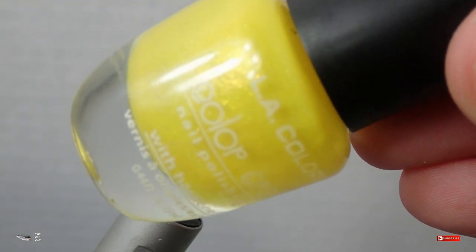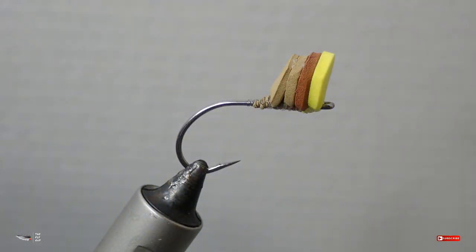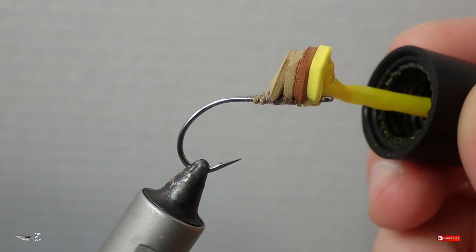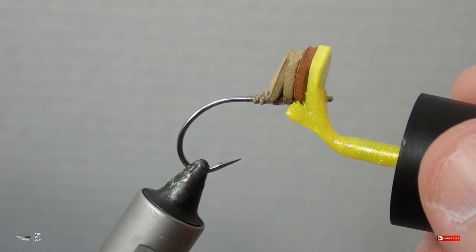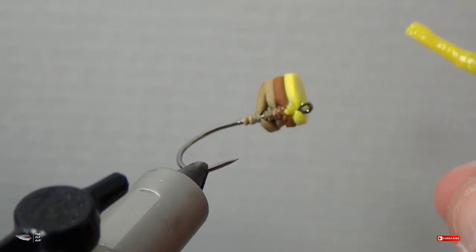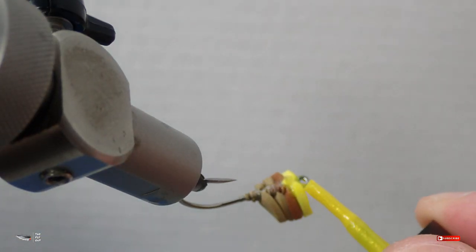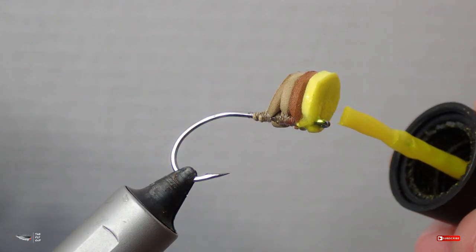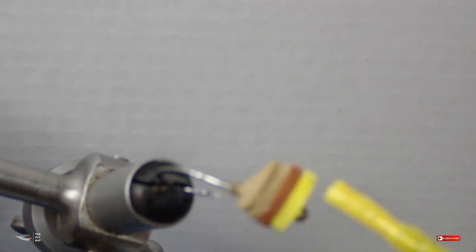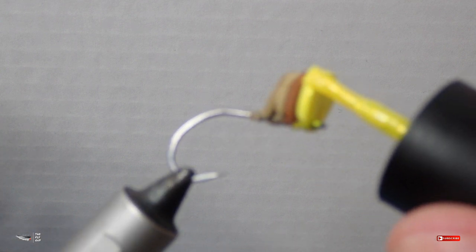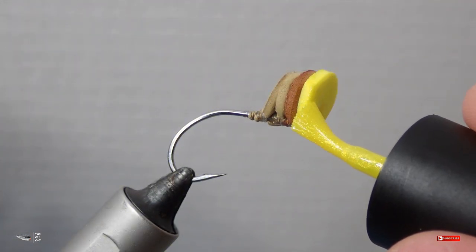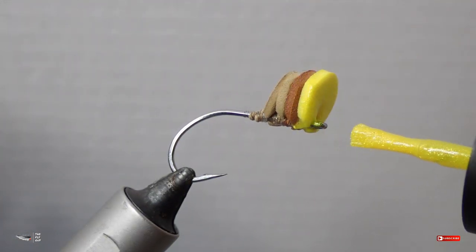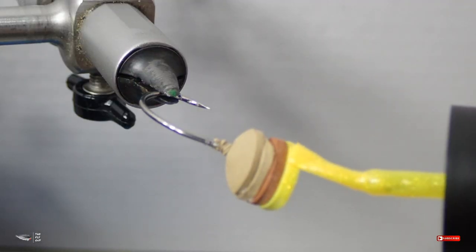Now after gluing this popper head together, you could ultimately be done with this popper head. You might want to put some eyes on it, you might want to detail it with sharpies, and then maybe you want to coat it with fabric paint. Maybe you're a saltwater tier and you use fabric paint, so you're going to coat that with maybe a clear glitter fabric paint, or you might try what I do.